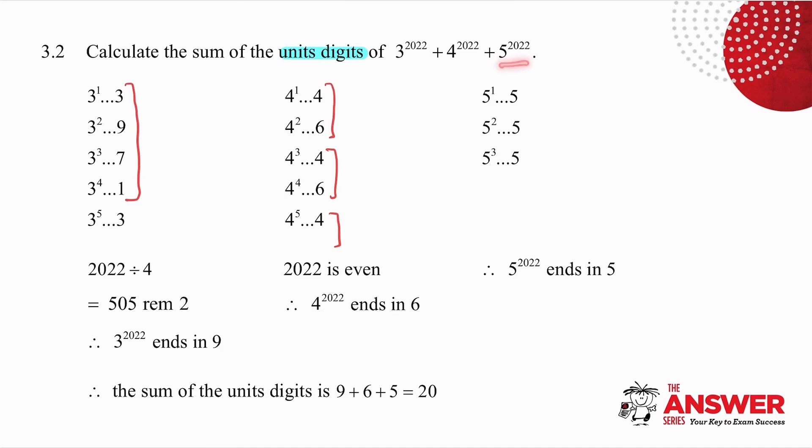What about the 5s? 5^1 is 5. 5^2 is 25, it ends in 5. 5^3 is 125, it ends in 5. And 5 to the power of anything always ends in 5.